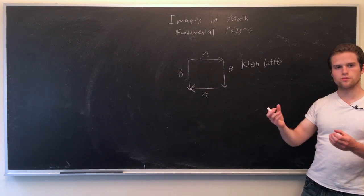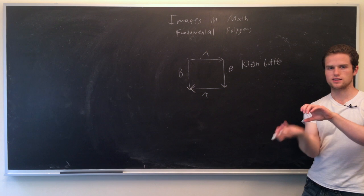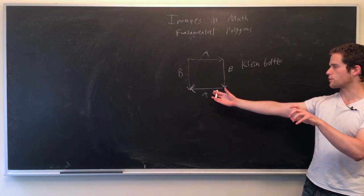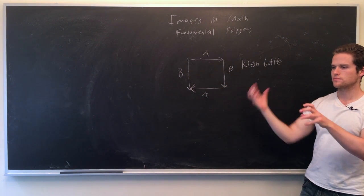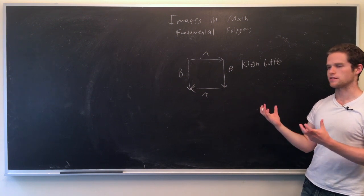So here we essentially take a tube, and instead of bringing it together like a torus, we kind of take it and twist it inside so that we have the opposite ends lining up, as opposed to the same ends lining up.